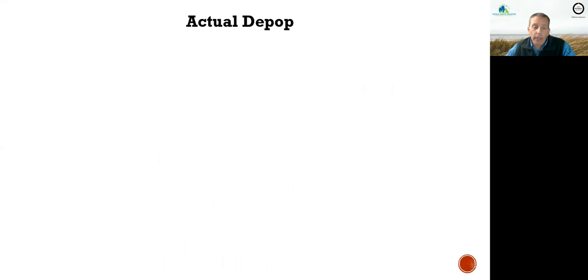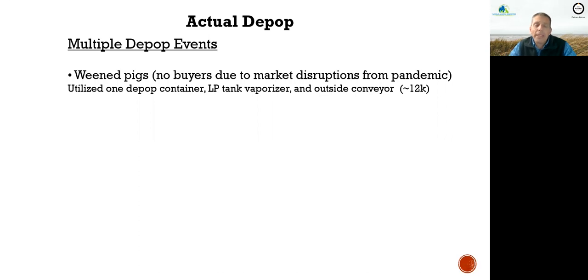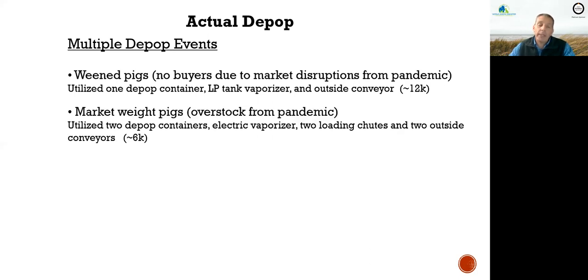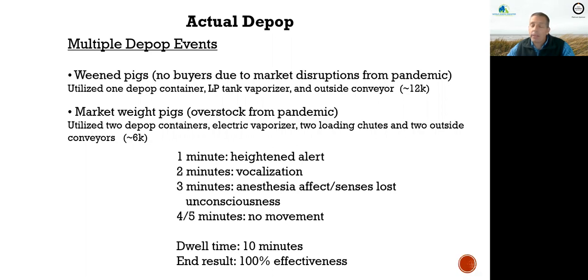We did have to conduct actual depopulations. First, we depopulated wean pigs — no buyers due to market disruptions from the pandemic. We utilized one depop container right on farm, with our LP tank vaporizer and an outside conveyor, and ended up doing about 12,000 wean pigs. It was an unfortunate situation, but those went to rendering so the product was utilized. We also had to do some market weight pigs due to overstock from the pandemic, using two depop containers, the electric vaporizer, two loading chutes, and two outside conveyors — approximately 6,000 head for those depops.